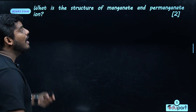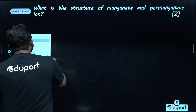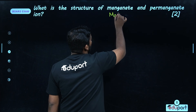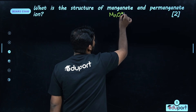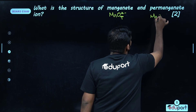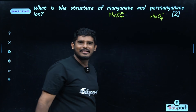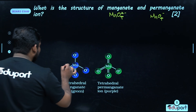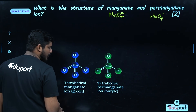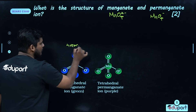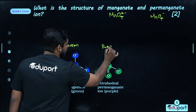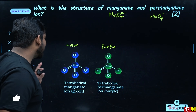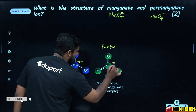What is the structure of manganate and permanganate ion? Manganate ion is MnO4 2-, and permanganate is MnO4 minus. Manganate has a green color and permanganate has a purple color. The oxidation state of manganese in manganate is +6 and in permanganate it is +7.